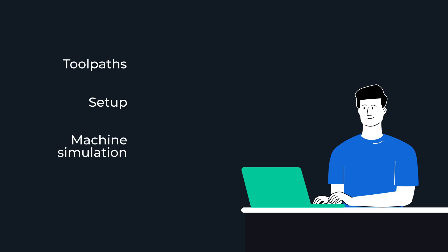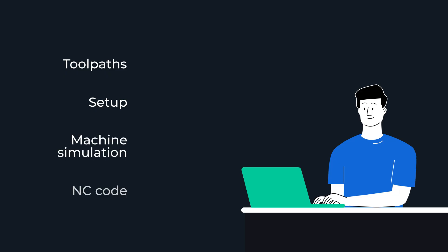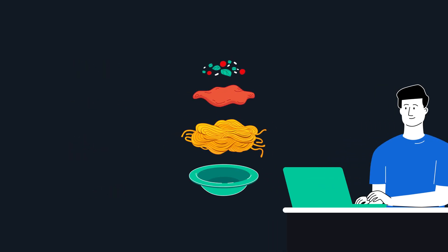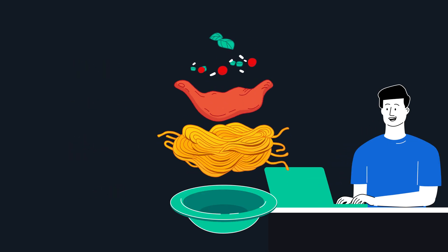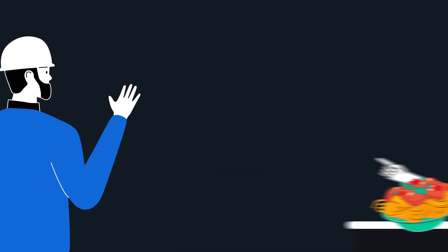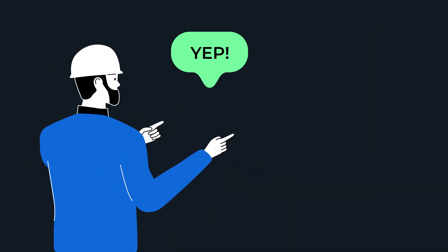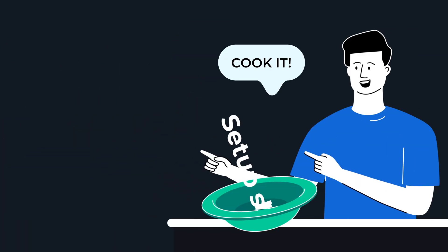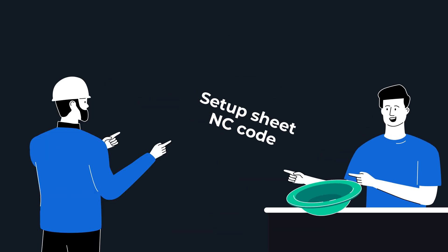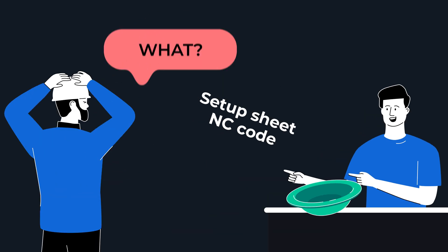Toolpaths, setup, full machine simulation and NC code — everything is ready. Let's call this project Pasta. The programmer asks the operator: do you want to try this delicious pasta? The operator wants to, but he can't, because all he gets is the recipe and a list of ingredients. But why? The pasta's cooked. Why cook it again? That's absurd.